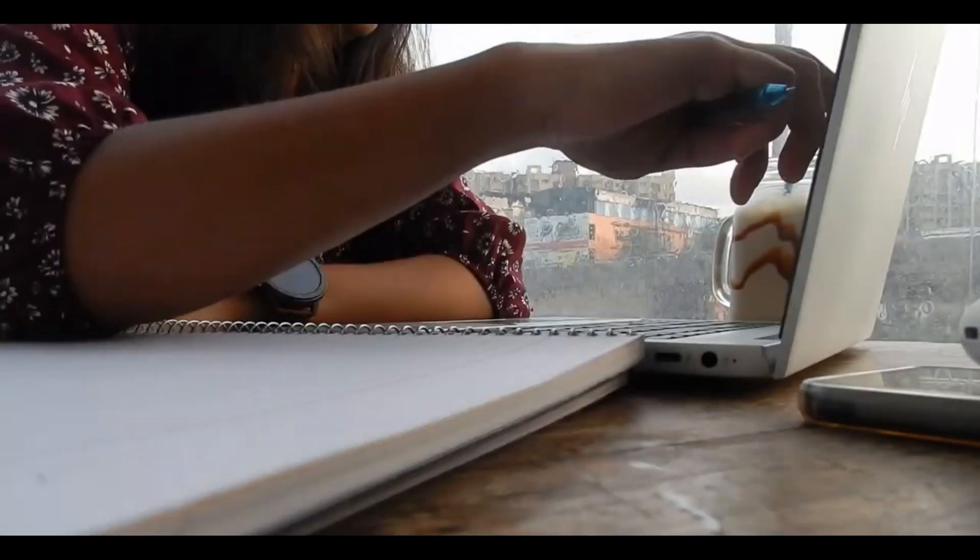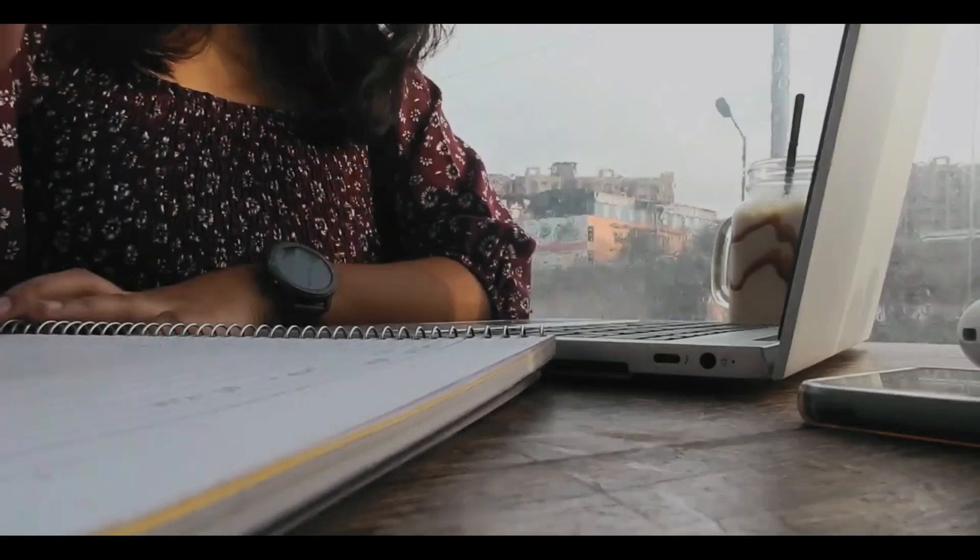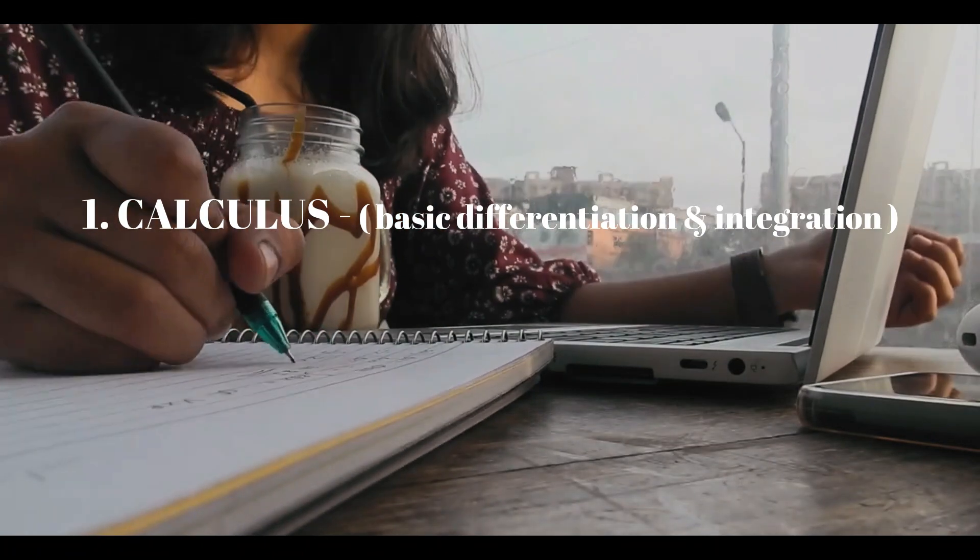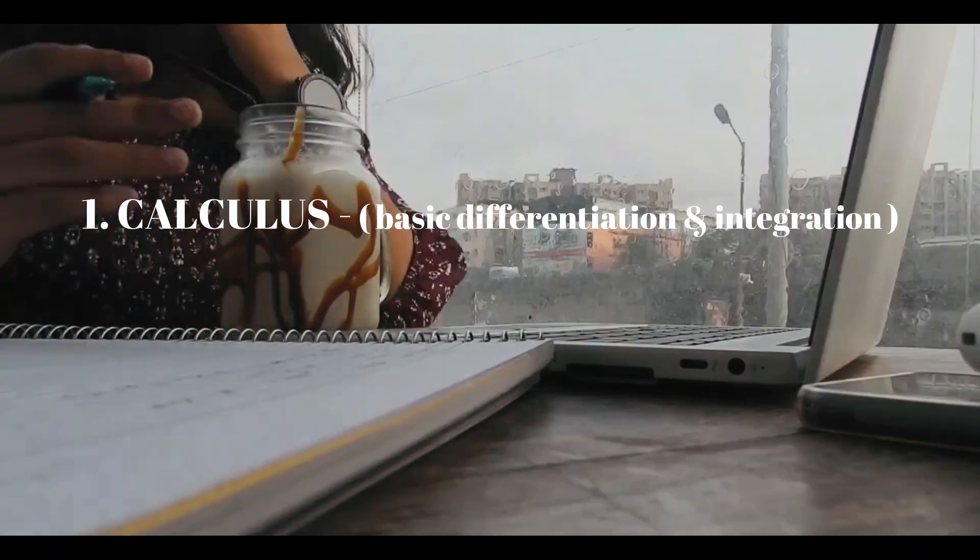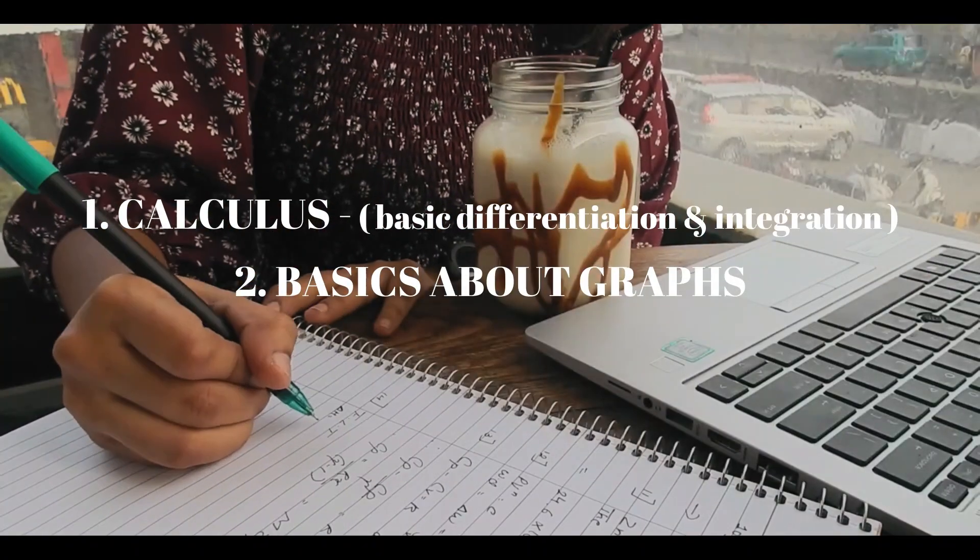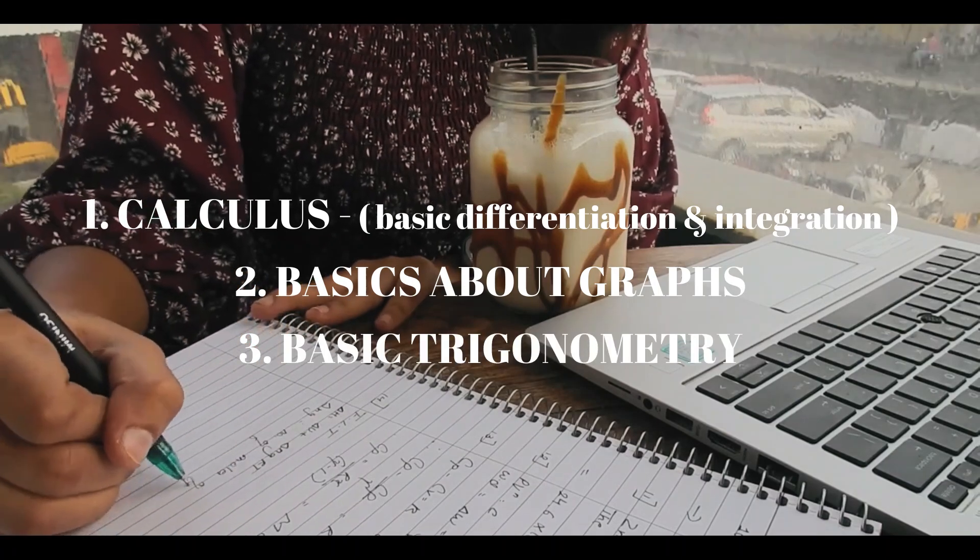Some basic mathematics which you have to learn before starting physics are: first of all, calculus - some basics in differentiation and integration. These are used in almost all the chapters of physics. Then learn some basics about graphs which will help you in motion chapter. Basic trigonometry is very essential for physics.